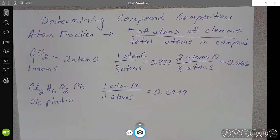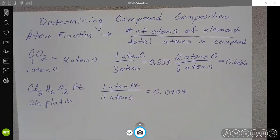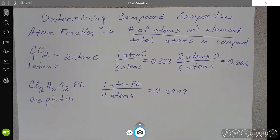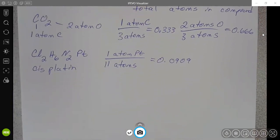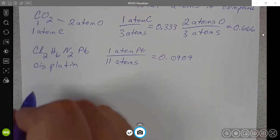This does come up here and there. It does make sense if you're trying to talk about molecules in particular, but what we're really going to use more of is we're going to use percent composition more. So let's stick with carbon dioxide and cisplatin for our examples here.